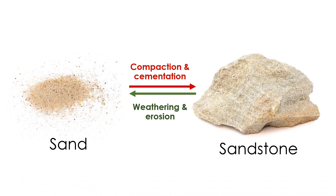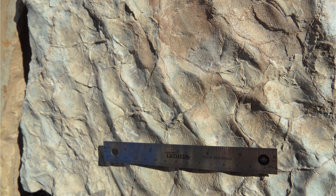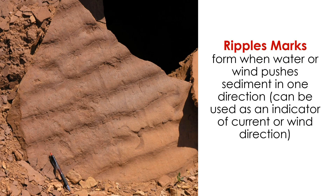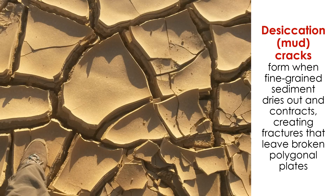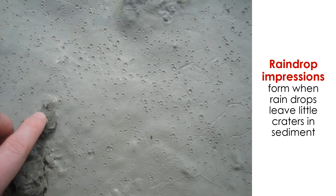If the rocks are sandstone, then you know that the environment consisted of sand. Sedimentary structures can provide evidence that the sediment was moving prior to becoming solid through lithification. These structures include wave ripples, crossbedding, desiccation cracks, and raindrop impressions.